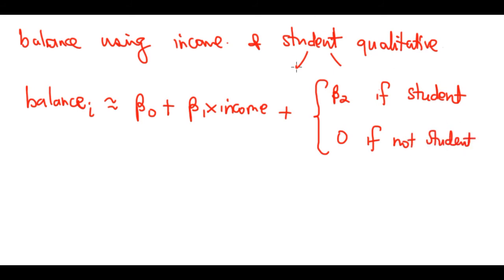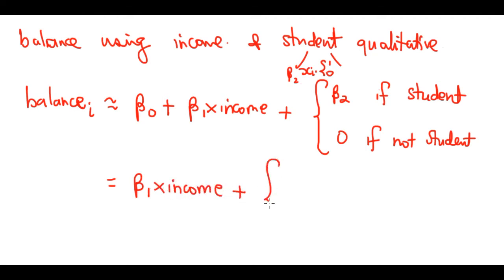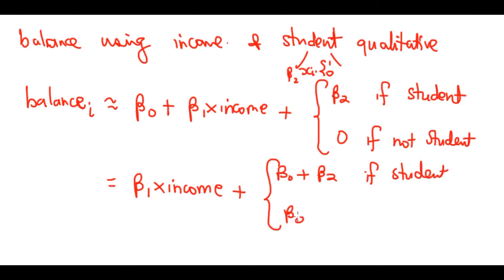We created an indicator variable xᵢ taking the value 1 if student and 0 if not student, multiplied by β₂. So if student: β₂×1 = β₂; if not student: β₂×0 = 0. This model can be rewritten as: β₁·income + (β₀ + β₂) if student, or β₁·income + β₀ if not student.